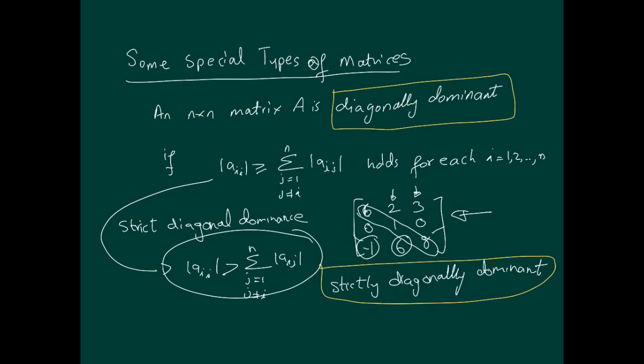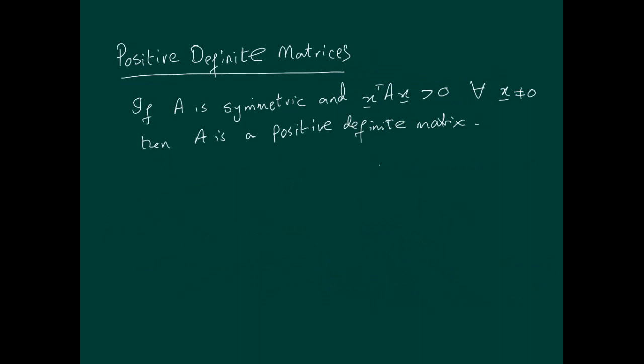We'll move on to positive definite matrices. A positive definite matrix is a symmetric matrix. If A is symmetric and it satisfies this relationship, XtAx is greater than 0 for all possible vectors x that are non-zero, then we say that A is a positive definite matrix.